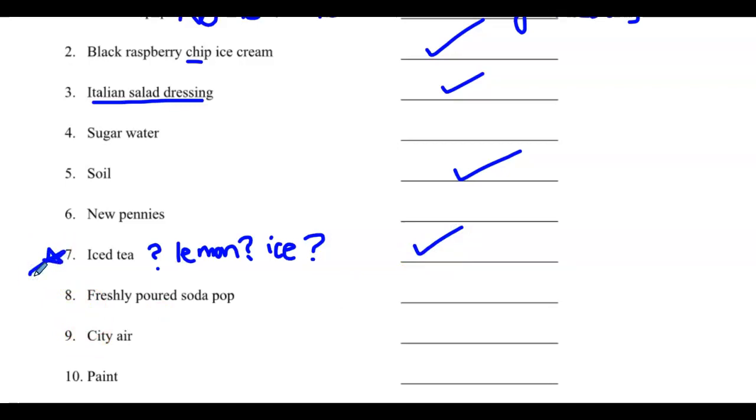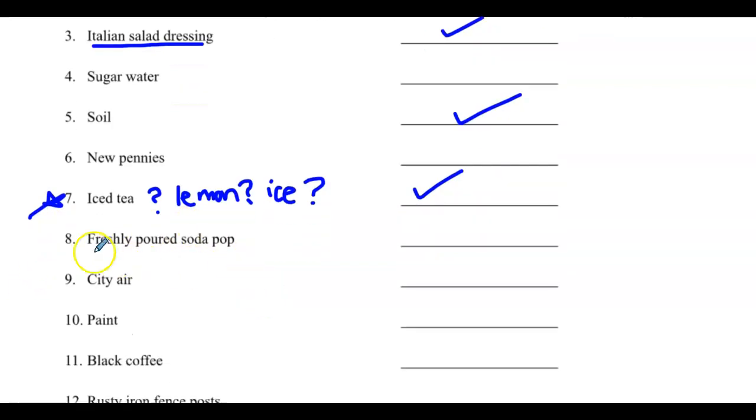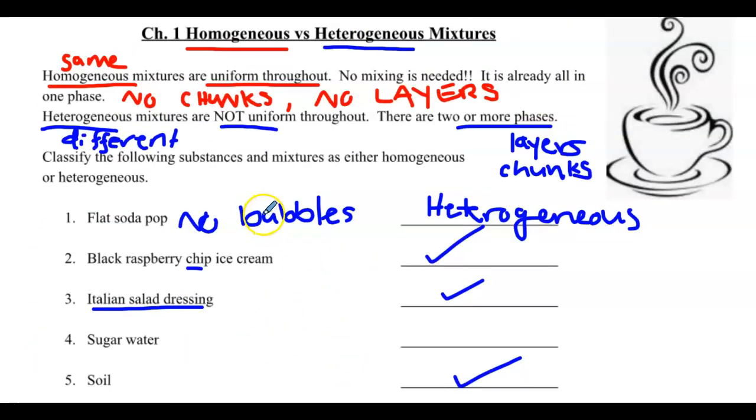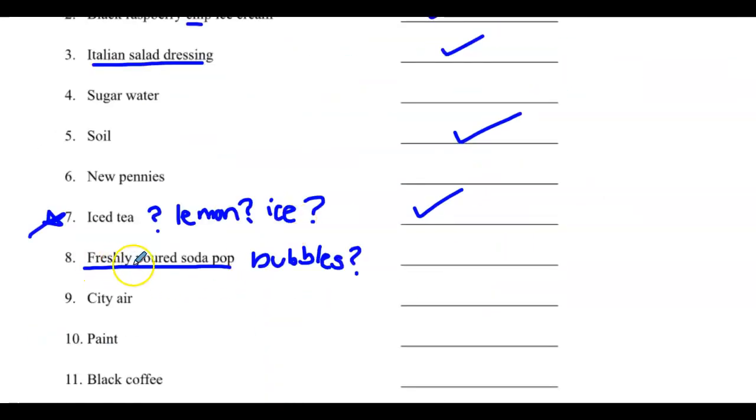Iced tea. Now this one, I have to ask you some questions. Do you put lemon in your iced tea? Do you put ice in your iced tea? If so, it's heterogeneous. We'll come back to this one. Maybe you like your iced tea warm. You've melted all the ice and it'll be homogeneous then. Freshly poured soda pop. Bubbles. So is that heterogeneous? Or is that homogeneous? Oh no. Did I do all these backwards?